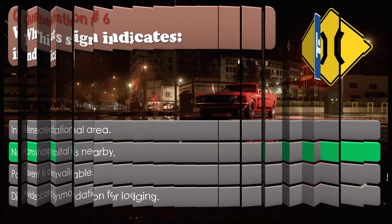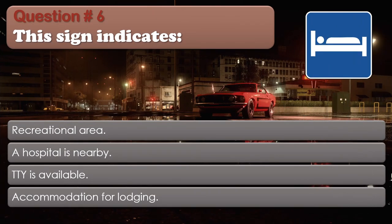Question number 6. This sign indicates: Recreational area. A hospital is nearby. TTY is available. Accommodation for lodging. The correct answer is: Accommodation for lodging.